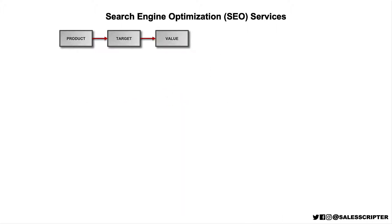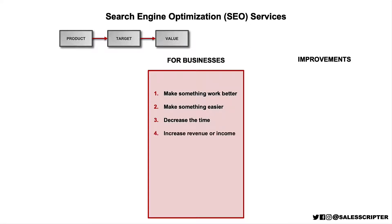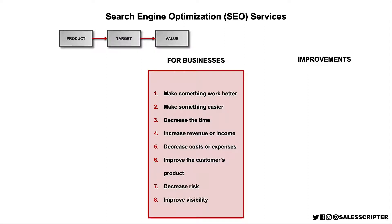The next step is to think about the value you have to offer — what improvements can you deliver to the target audience? Our goal is to think of probably three to six improvements. Here's an eight-point checklist to use as a guide: does what you sell help to make something work better, make something easier, decrease the time it takes to do something, increase revenue or income, decrease costs or expenses, improve the product the customer sells, decrease the risk of something bad happening, or improve visibility in terms of access to information or communications? We don't have to think of an improvement in each of those — just use the list to think of a few ways your product or service can help.